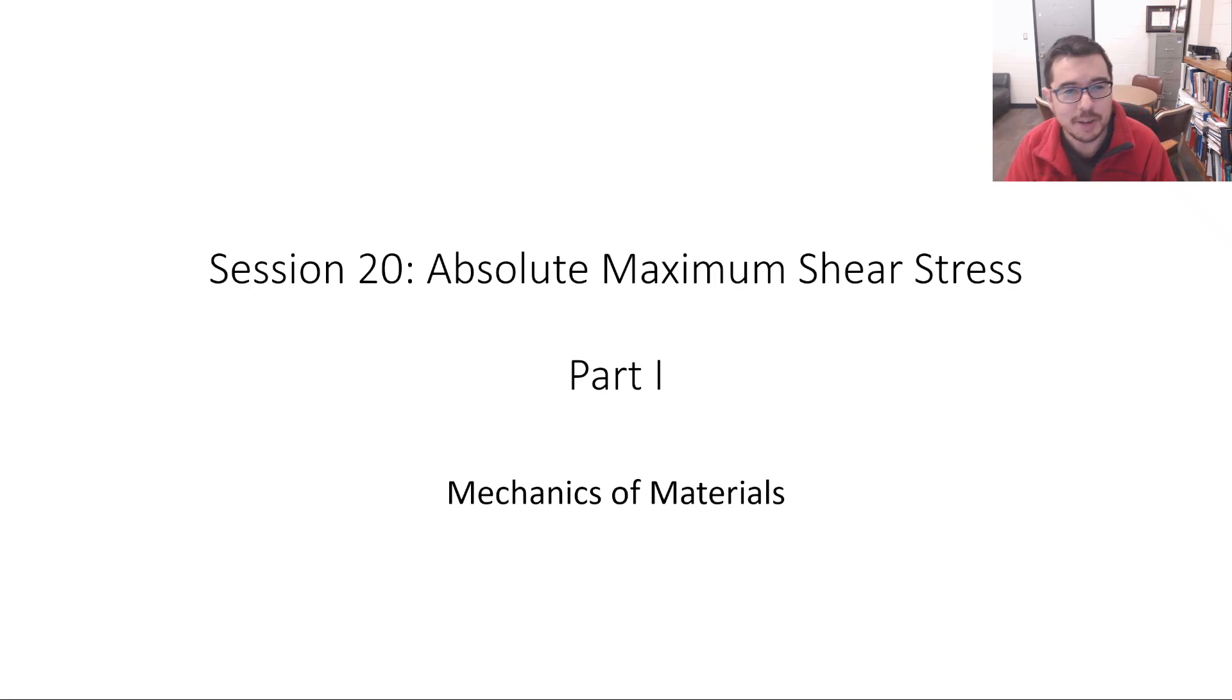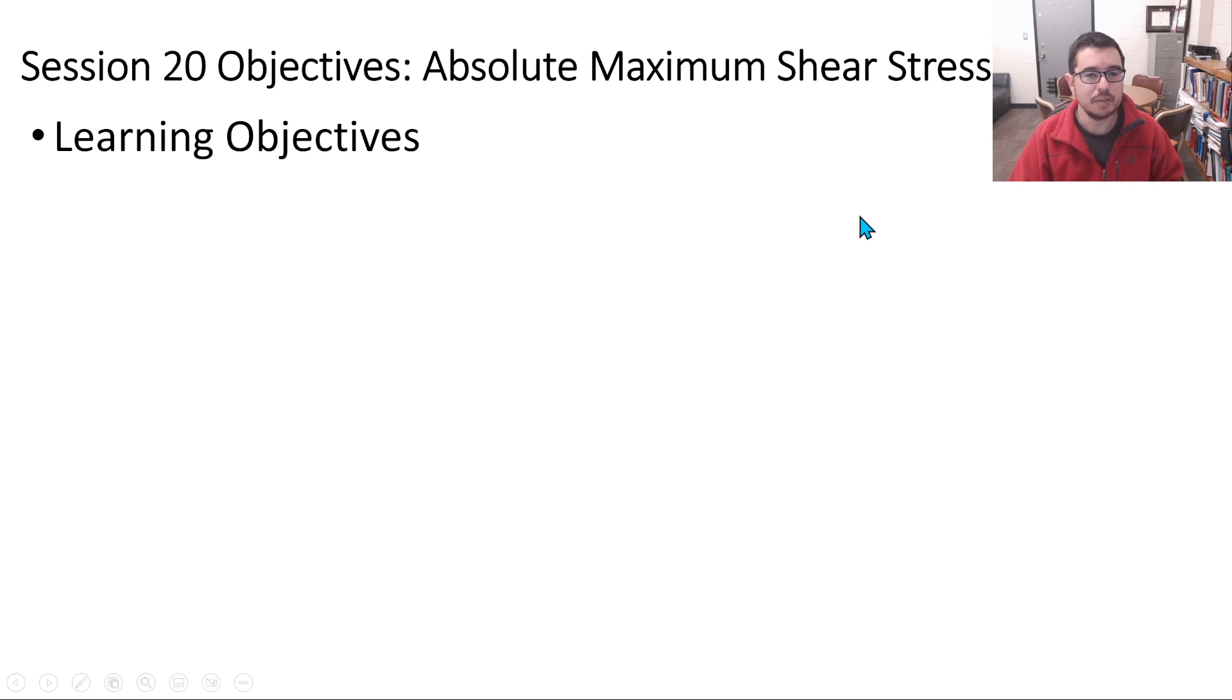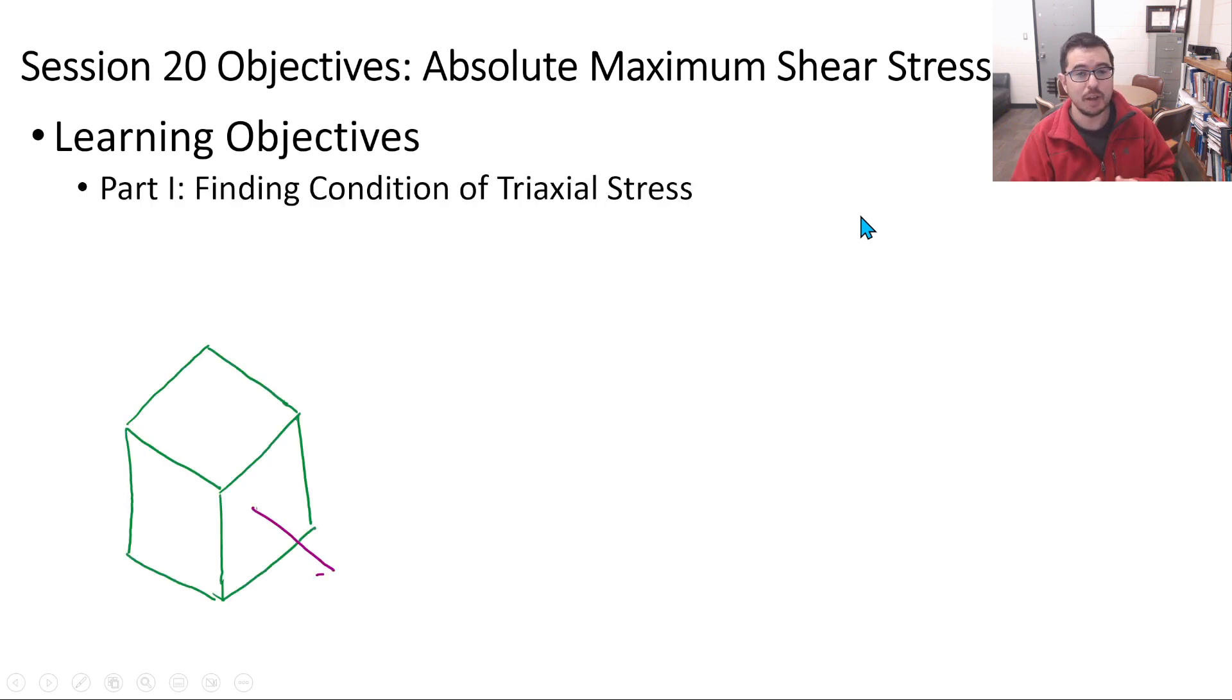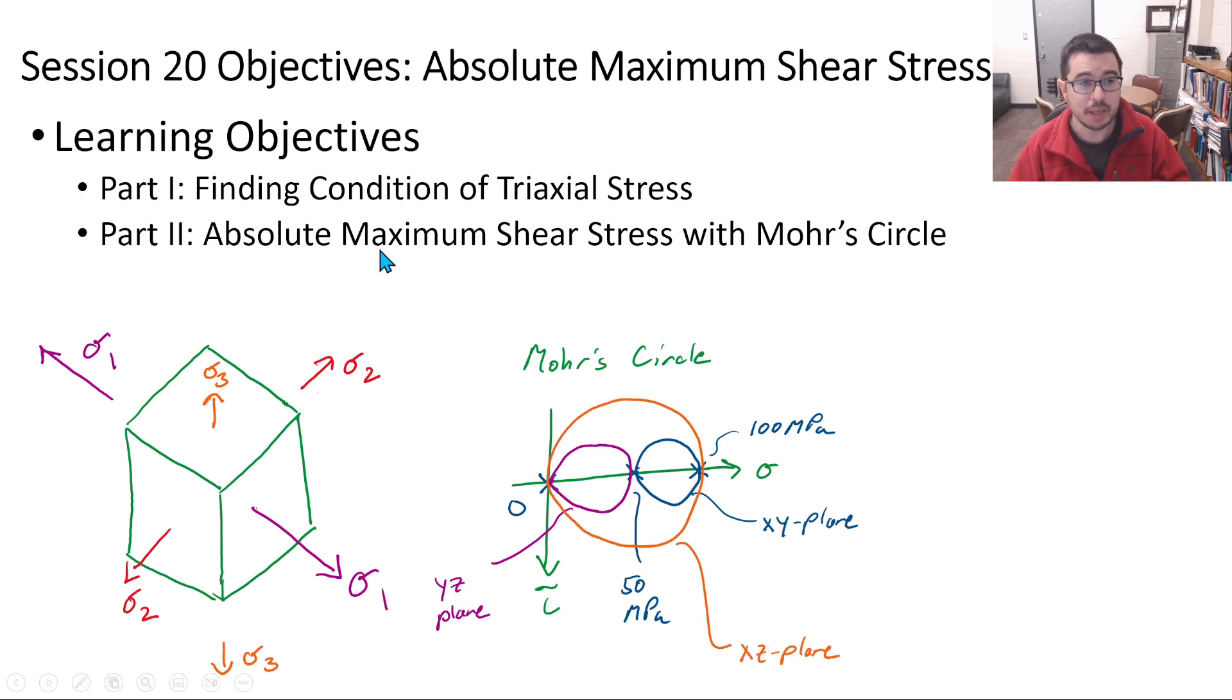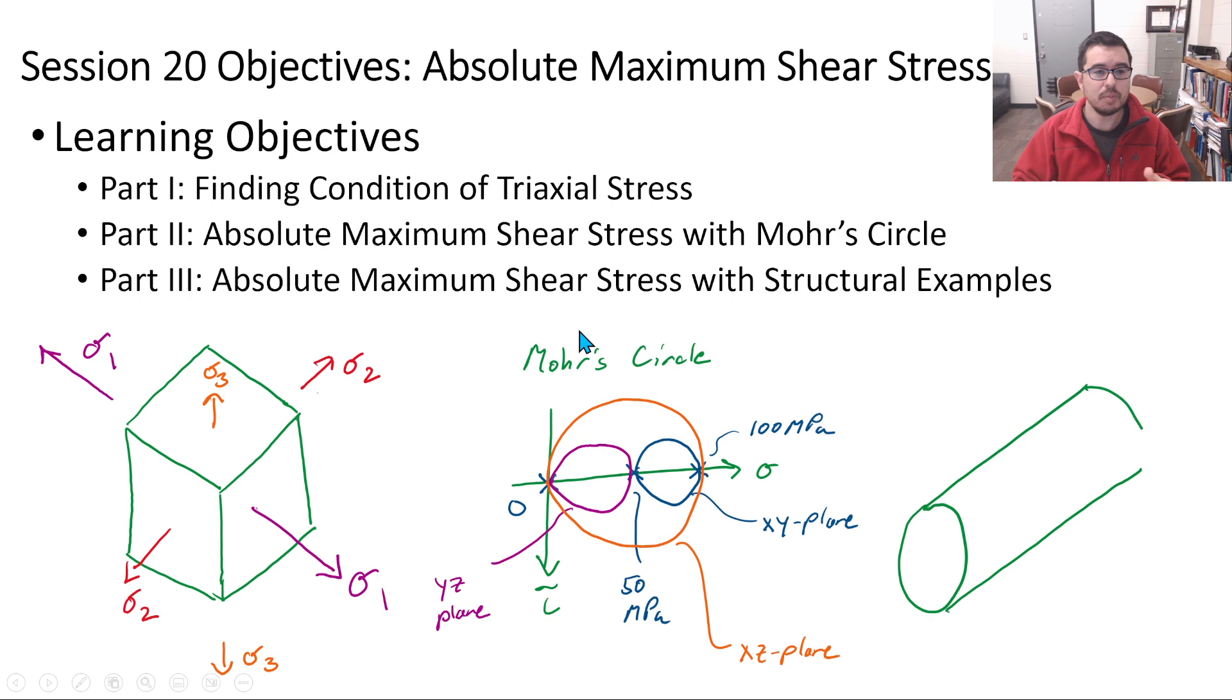Welcome to session 20 on Absolute Maximum Shear Stress. In this session, we will discuss how to find conditions of triaxial stress, taking a general state of stress and finding the principal stresses. In the second portion, we will look at how we use Mohr's circle to calculate absolute maximum shear stress. In the third part, we'll look at some structural examples where we can use Mohr's circle to calculate absolute maximum shear stress.